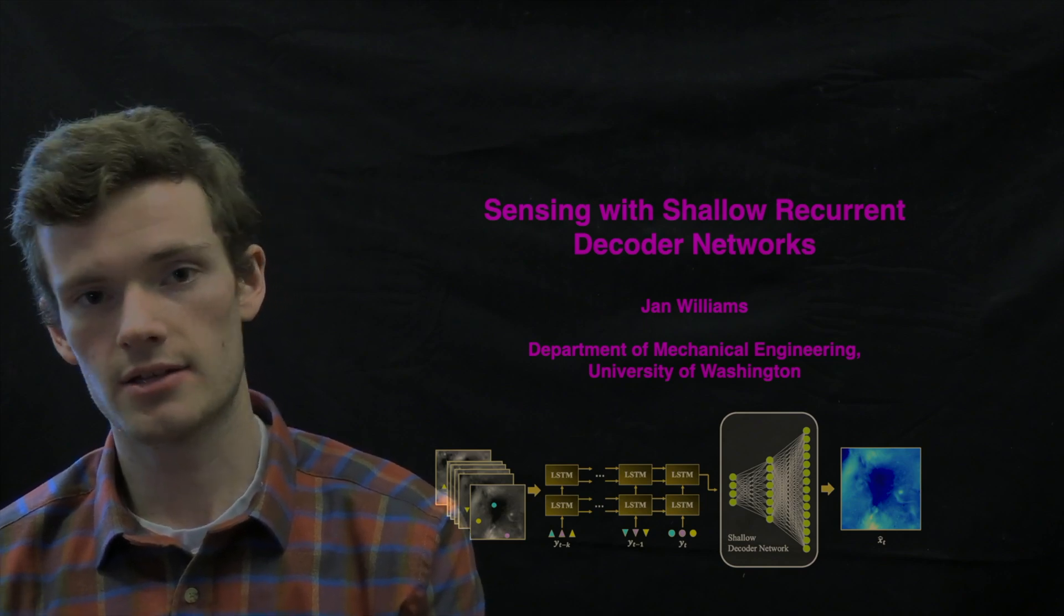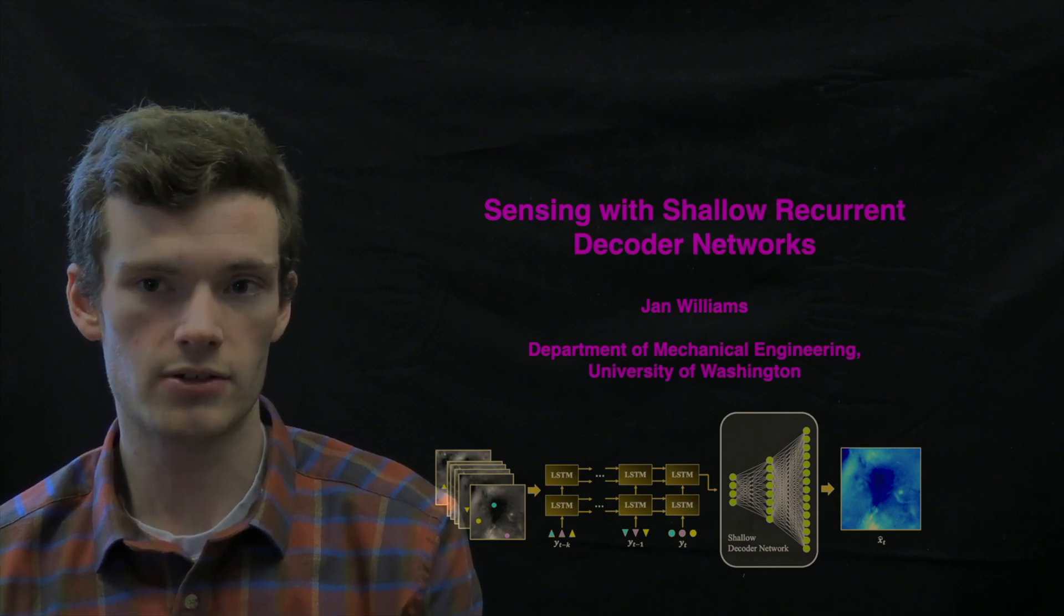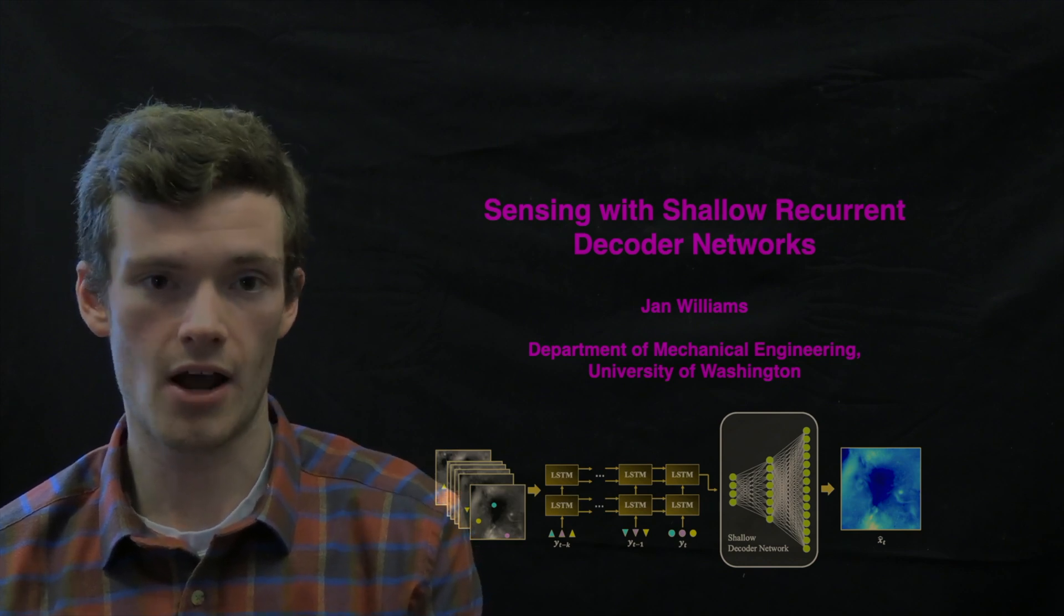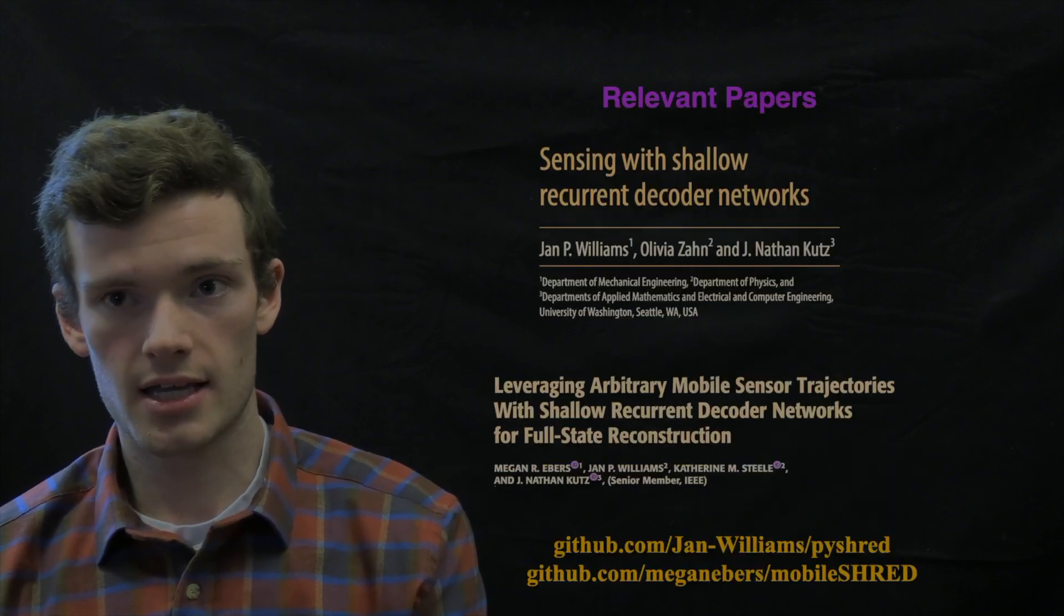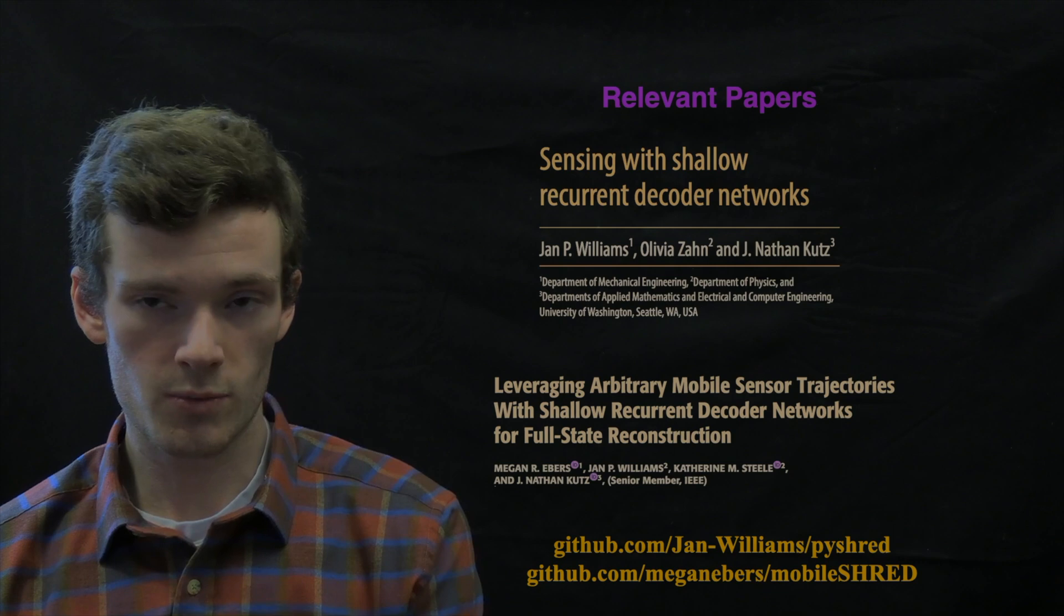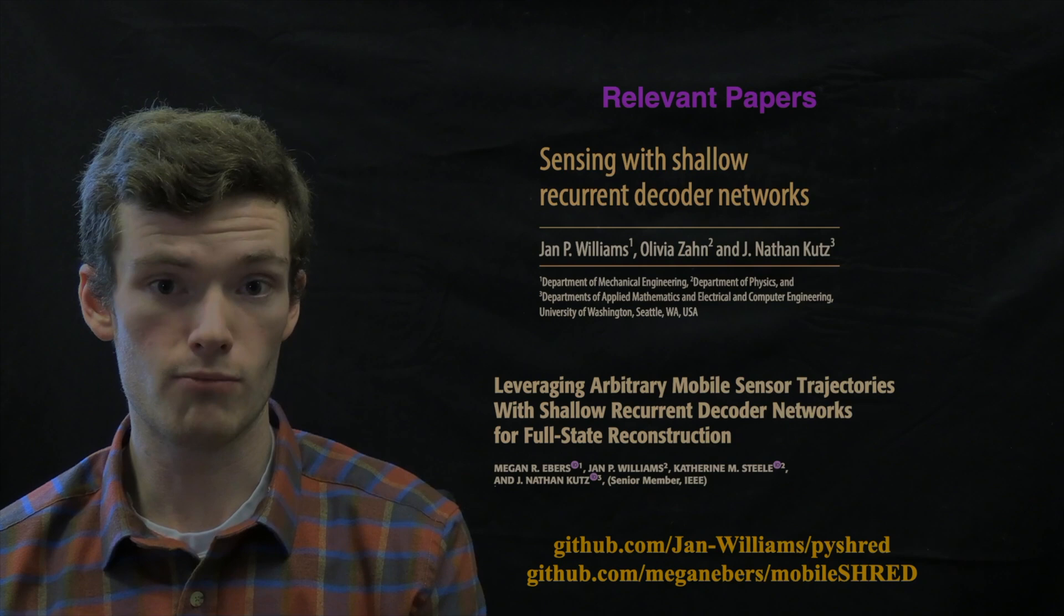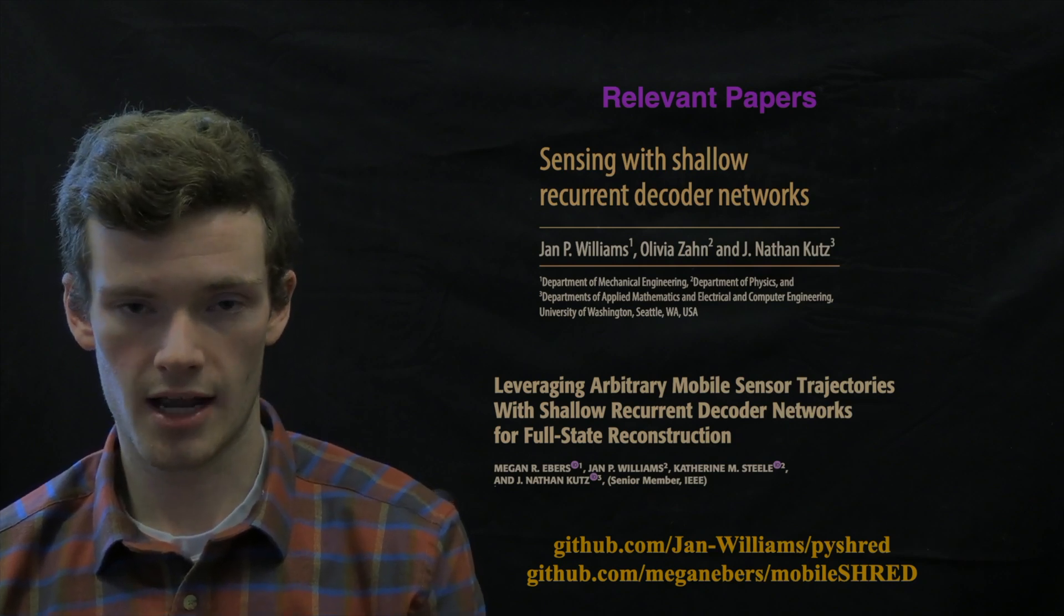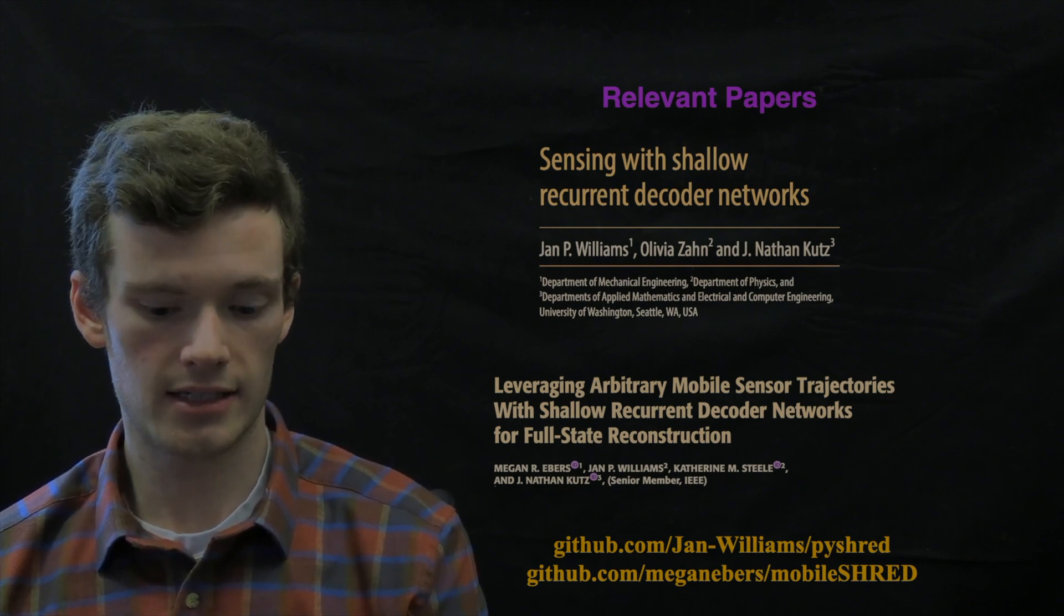In the previous lecture, Nathan talked a little bit about the overall framing of SHRED as an architecture, or shallow recurrent decoders as an architecture, and today we're going to focus more specifically on how that architecture can be used for sensing problems. The relevant work today is these two papers, Sensing with Shallow Recurrent Decoder Networks and this follow-up about leveraging arbitrary mobile sensors. Both of the GitHub links are supplied here and should also be in the video description.